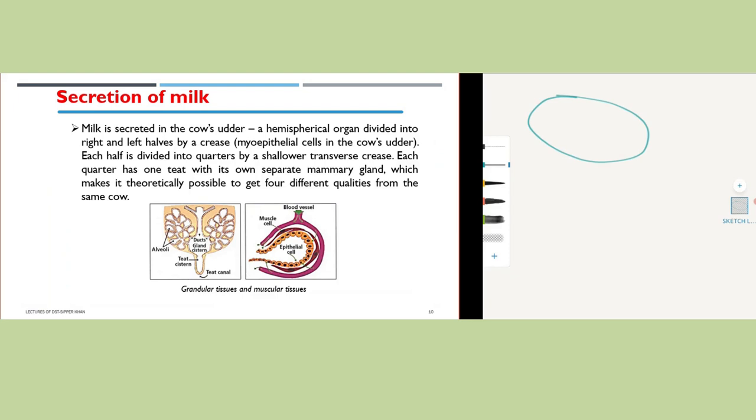So the udder is basically a hemispherical organ which is divided into right and left side. These two parts are further divided into quarters by the help of a transverse line which is sort of like a crease but shallower.